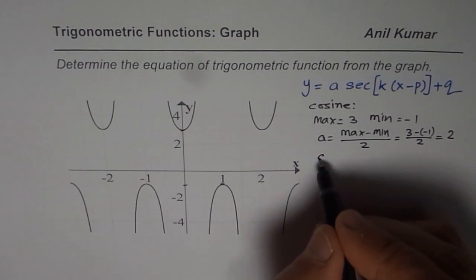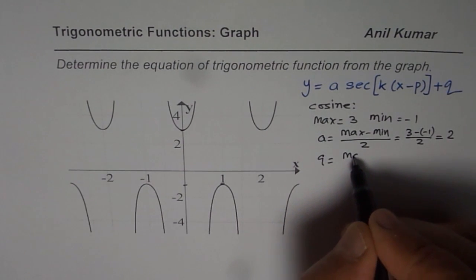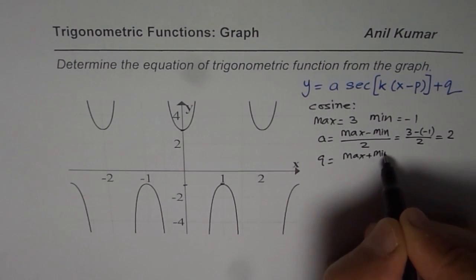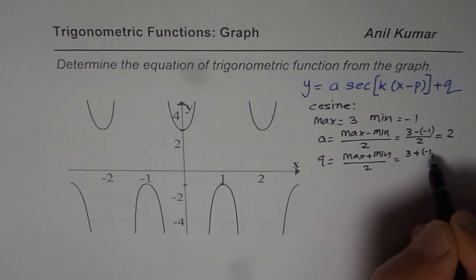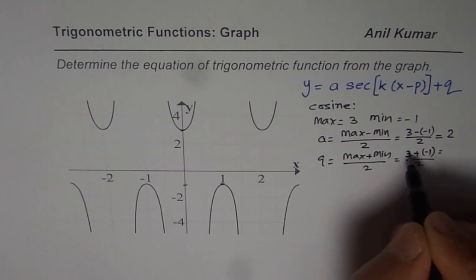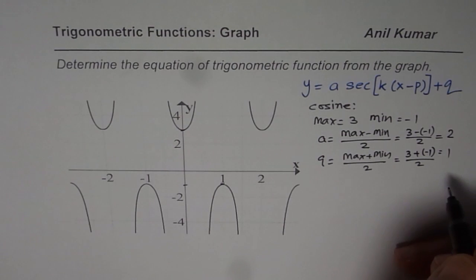Q, the axis value, will be average value. Maximum plus minimum divided by 2 which is 3 plus (−1) divided by 2 which is 2 divided by 2 is 1.